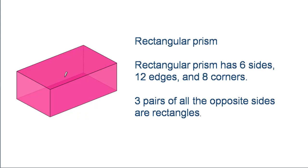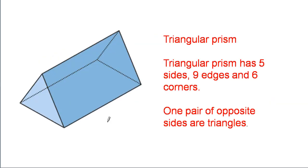Rectangular prism. Rectangular prism has six sides, twelve edges and eight corners. Three pairs of the opposite sides are rectangles. That is the difference between rectangular prism and cuboid — rectangular prism has no square sides in it.